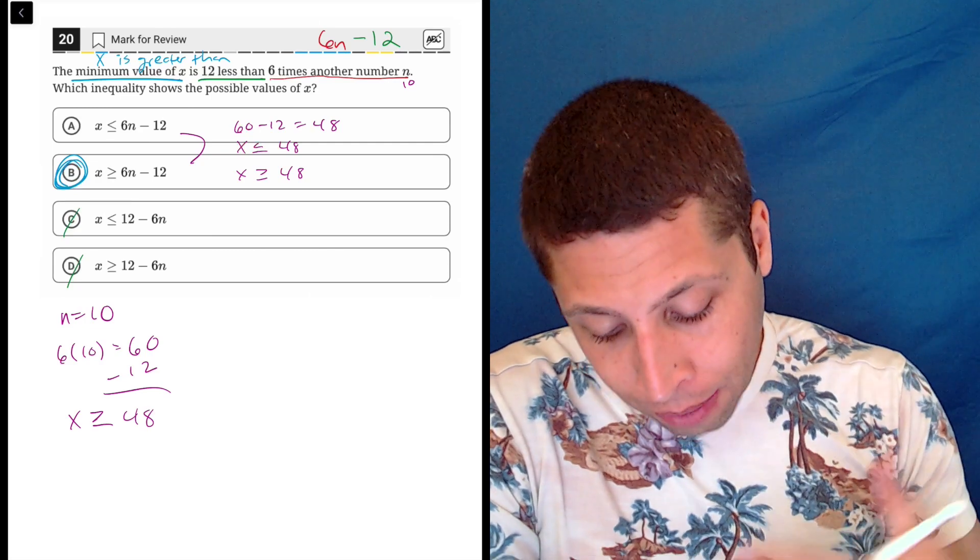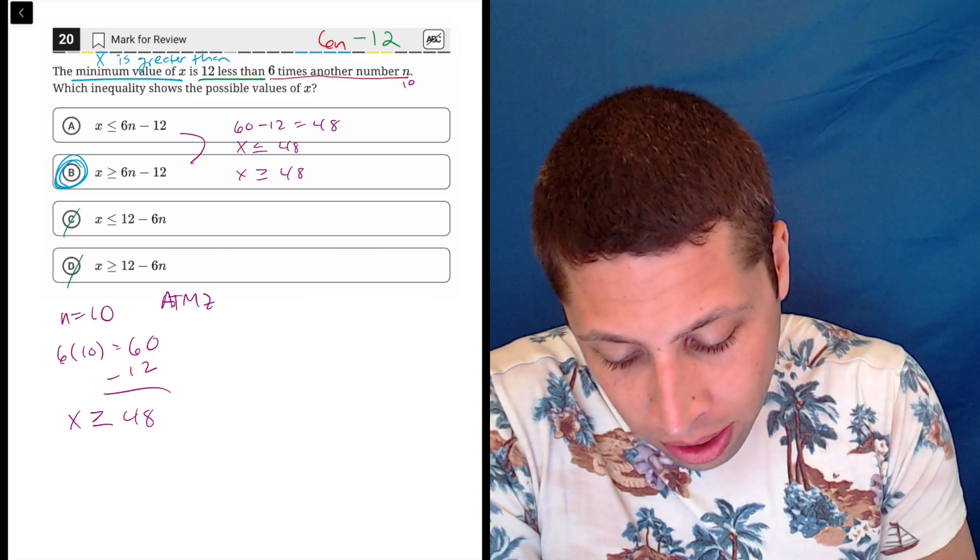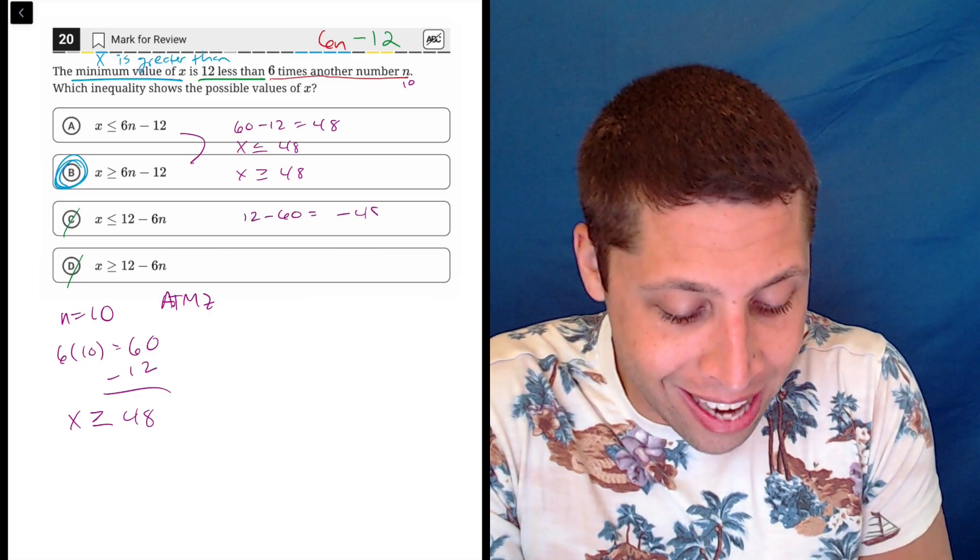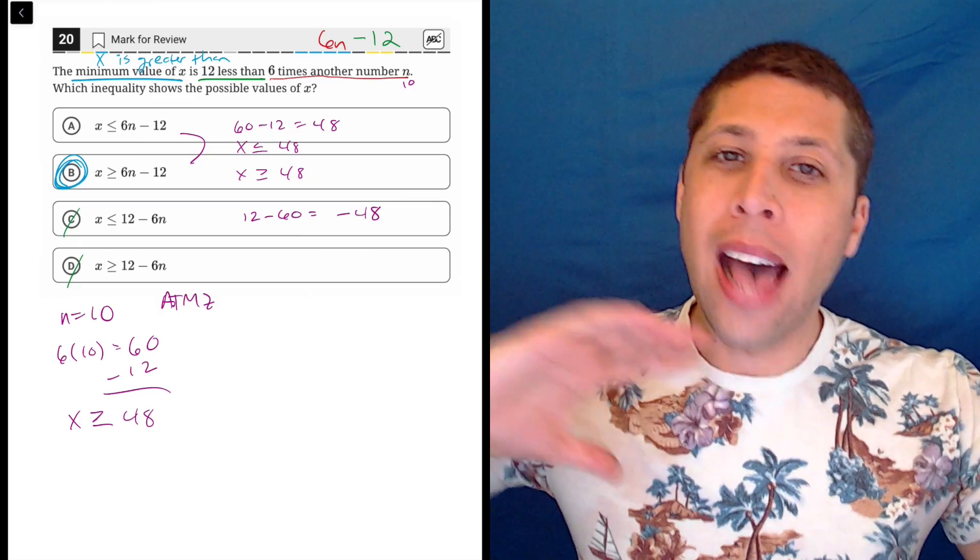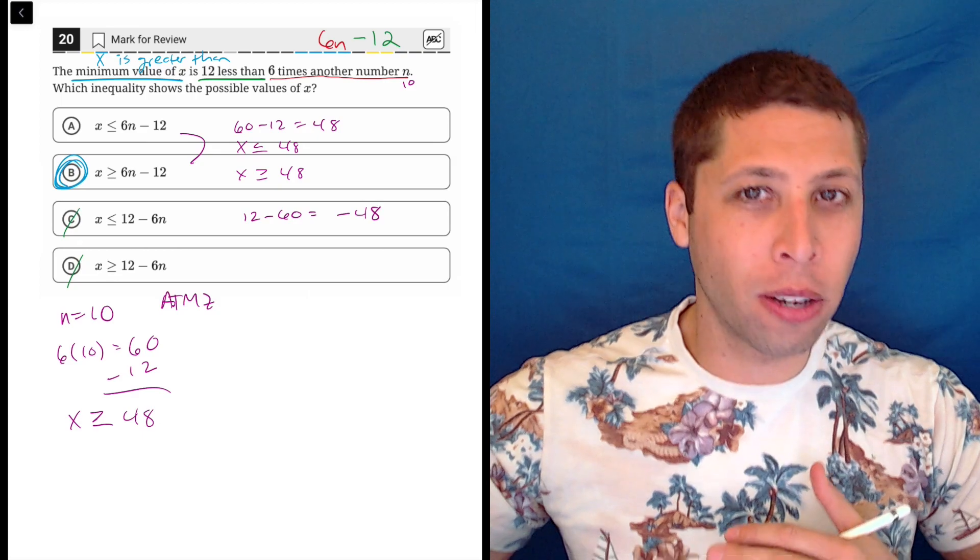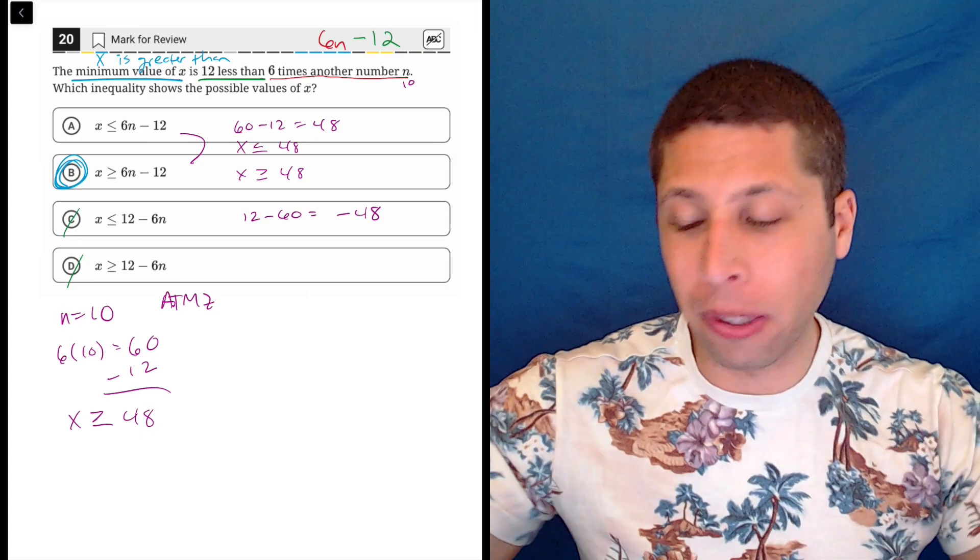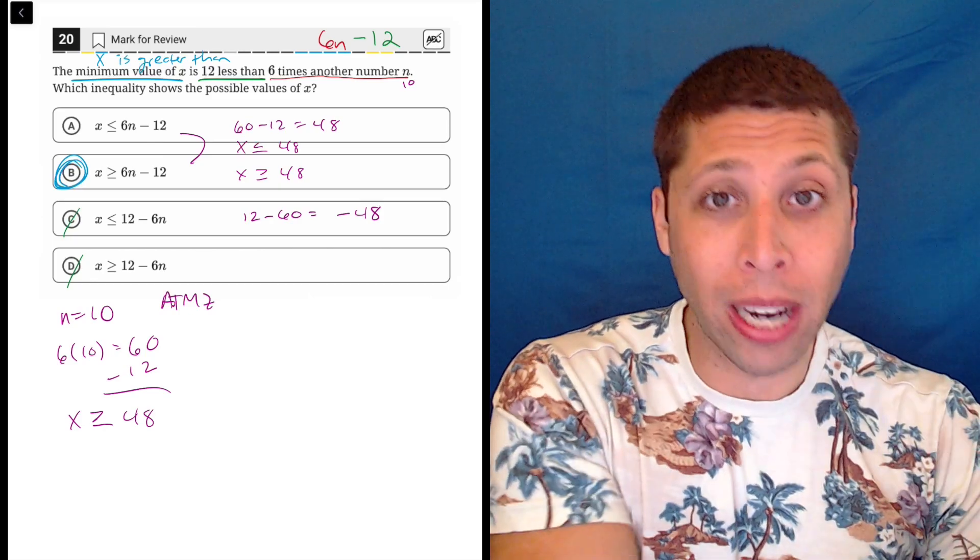But luckily, if we did arithmetize, we would have this ability to see that C and D are wrong, because 12 minus 60 is negative 48. So hopefully there, you'd be like, oh, that's a different number than what I started with or what I want. It doesn't quite make sense. And so hopefully you'd be able to eliminate C and D, because they're just producing the wrong number on the right side of the inequality.